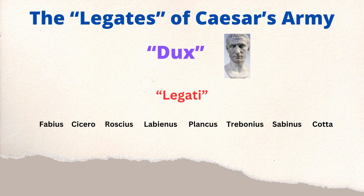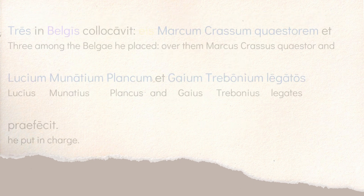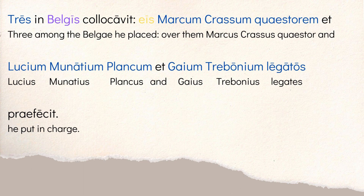It's more important to understand who the legates of the Roman army are. Caesar, the dux, is the commander and general. Directly underneath him are the legates — best translated as 'lieutenant generals' — a subdivision so Caesar can give orders and have things happen quickly. In Book 5 he names several: Fabius, Cicero, Roscius, Labienus, Plancus, Trebonius, and then the two infamous ones, Sabinus and Cotta. Understanding this hierarchy helps visualize what's happening when he talks about giving legions to these men.